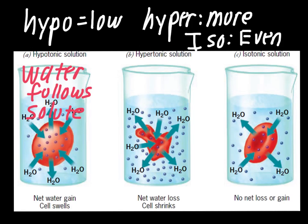A hypertonic solution has more solute than the cell, so that's going to cause it to shrink. An example would be putting a cell in ocean salt water. A hypotonic solution, in a perfect scenario, would be distilled water — a solution that has no solute at all. Since it has no solute and water follows the solute, water is going to stream inside the cell, causing it to swell or possibly even burst.